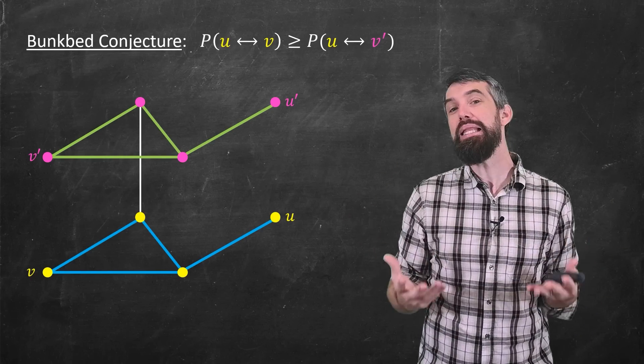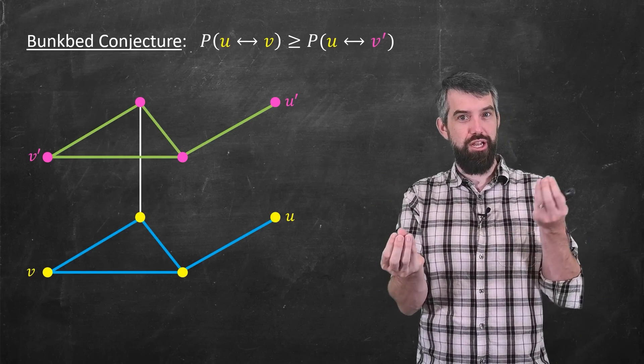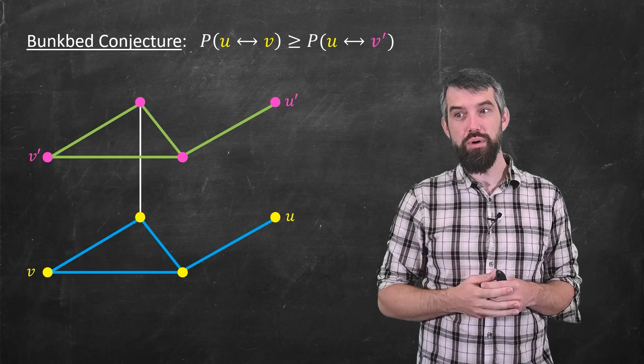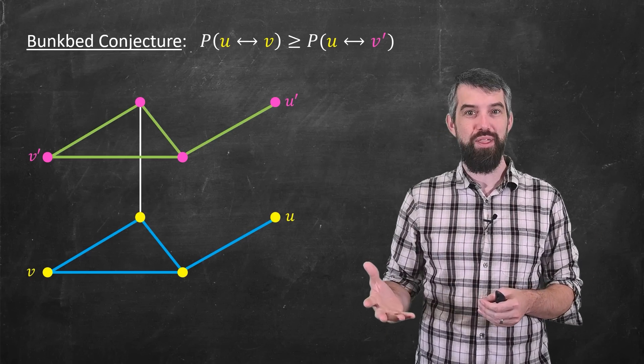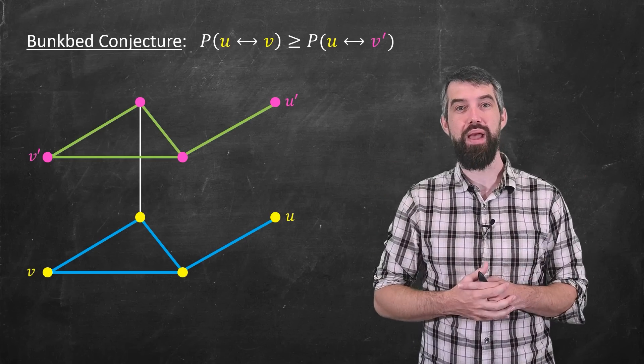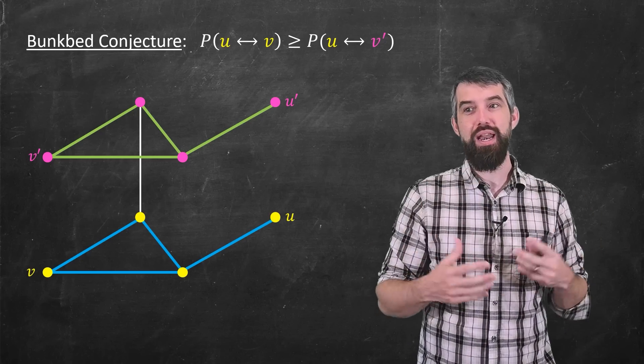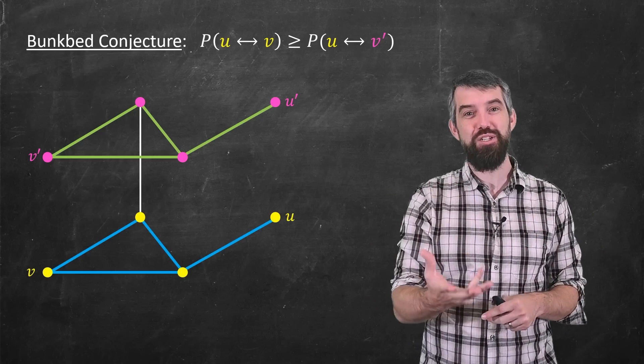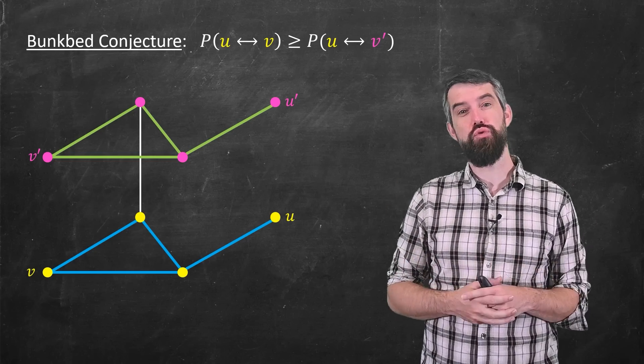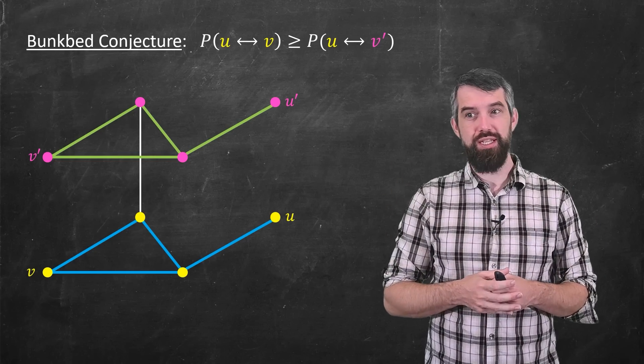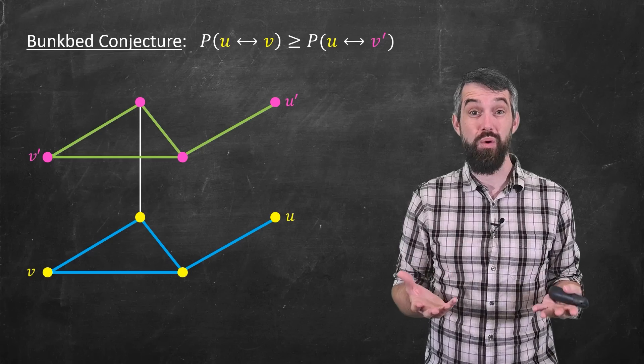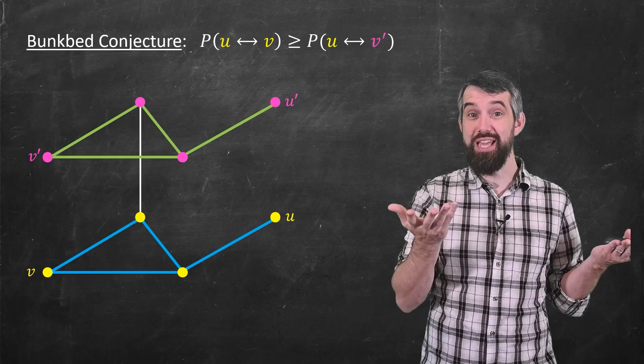It says that the probability that I can get from U to V, that is, the probability that I can move along the base, is bigger or equal to the probability that I can start at the base and then get to the V' going up to the top bunk in my bunk bed. And the conjecture says that this is true for all connected graphs and all subset of bunk bed posts and all pairs U and V. And intuitively here, it seems like this should be true. If I had all of the posts in my bunk bed, the probabilities would be equal. If I could get from U to V, I would just go up the post to get to V'.